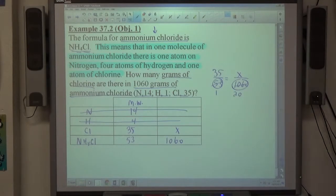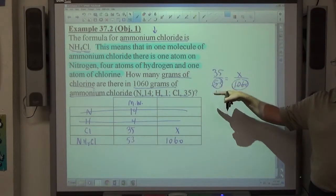It divides evenly, so 20. If it doesn't divide evenly, use your calculator. 35 times 1,060 divided by 53 equals, it'll spit out the right answer for you.